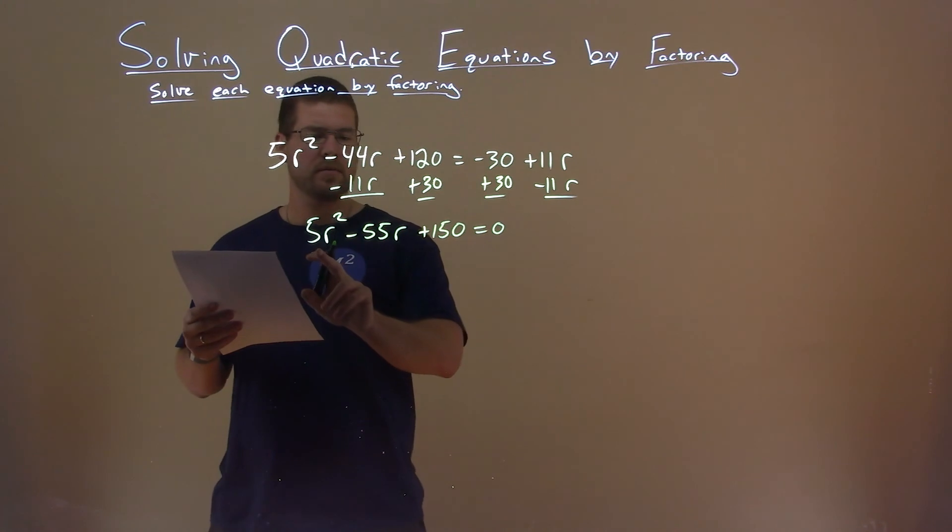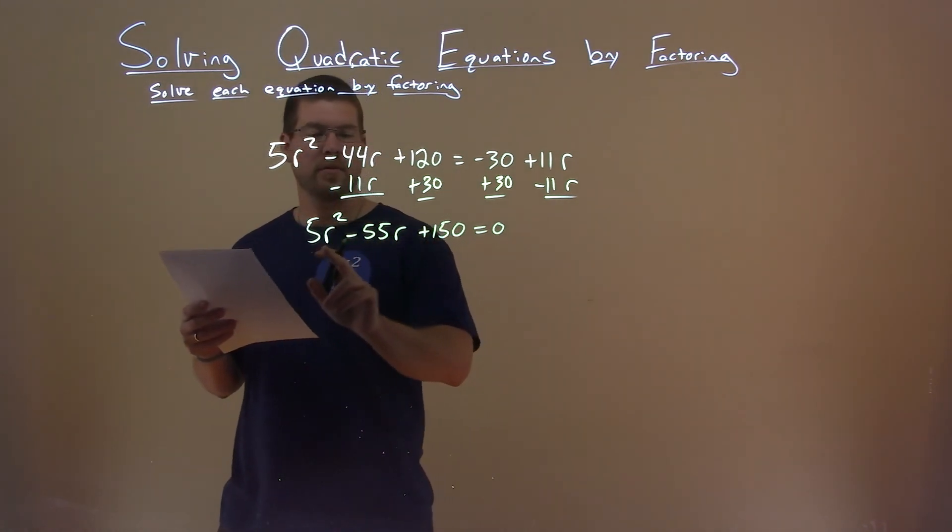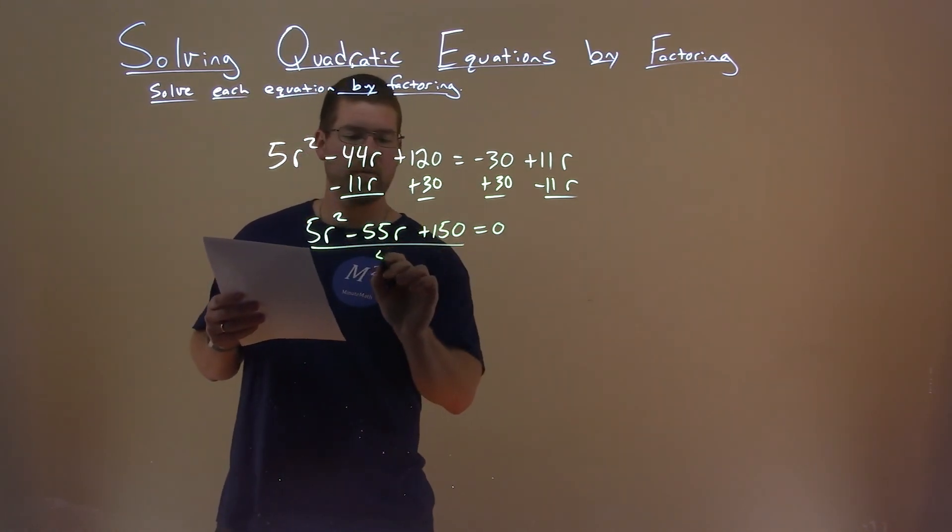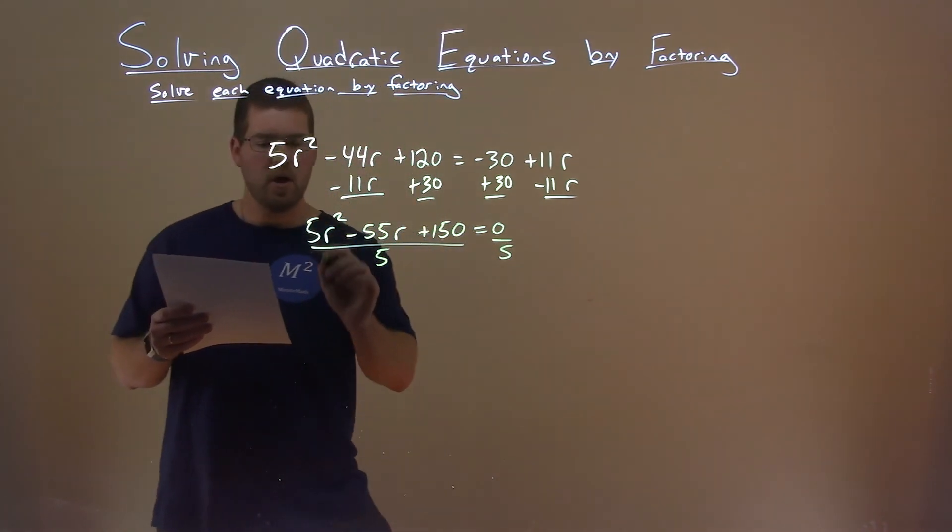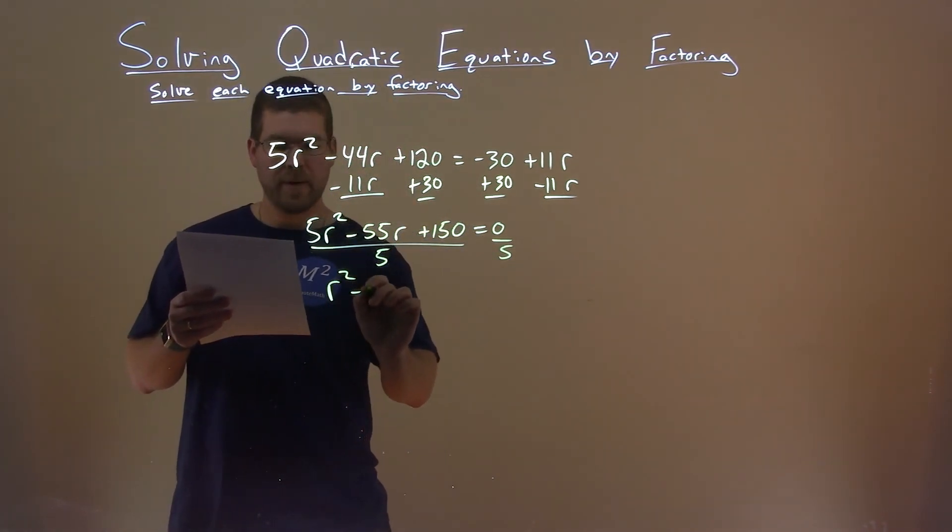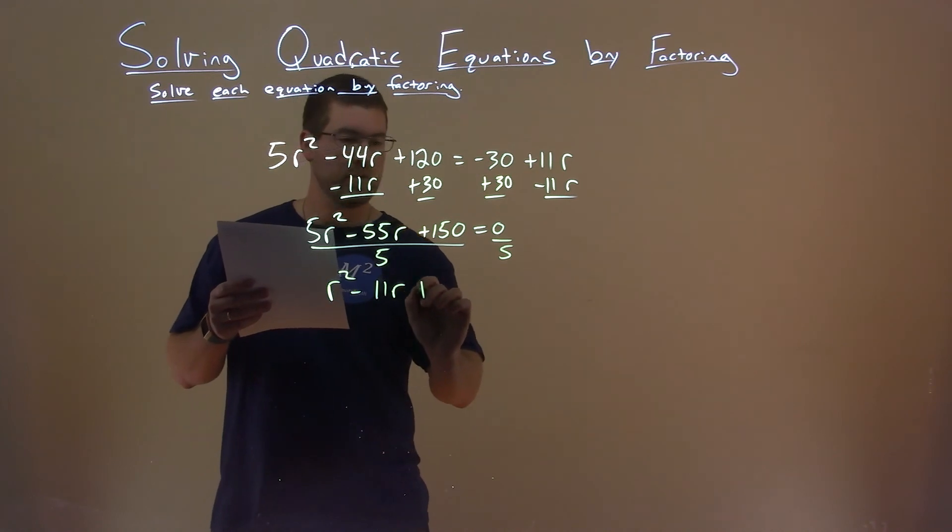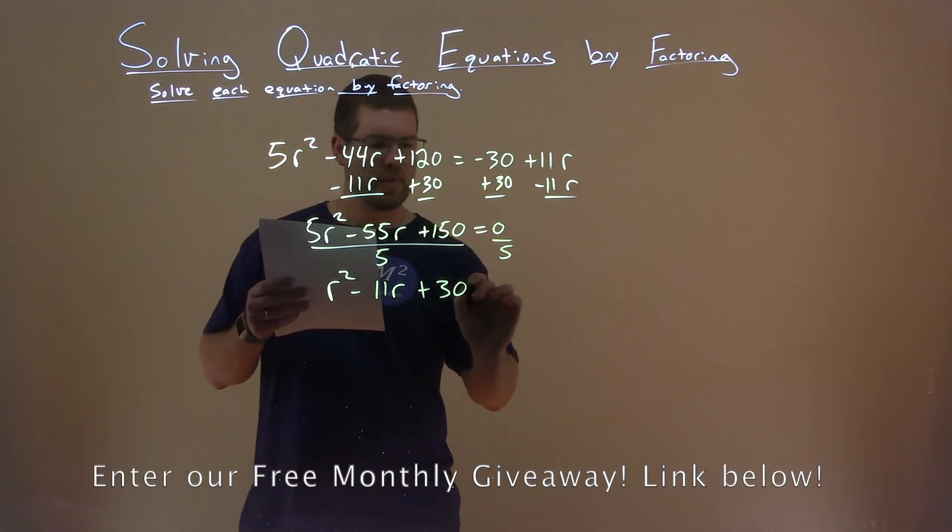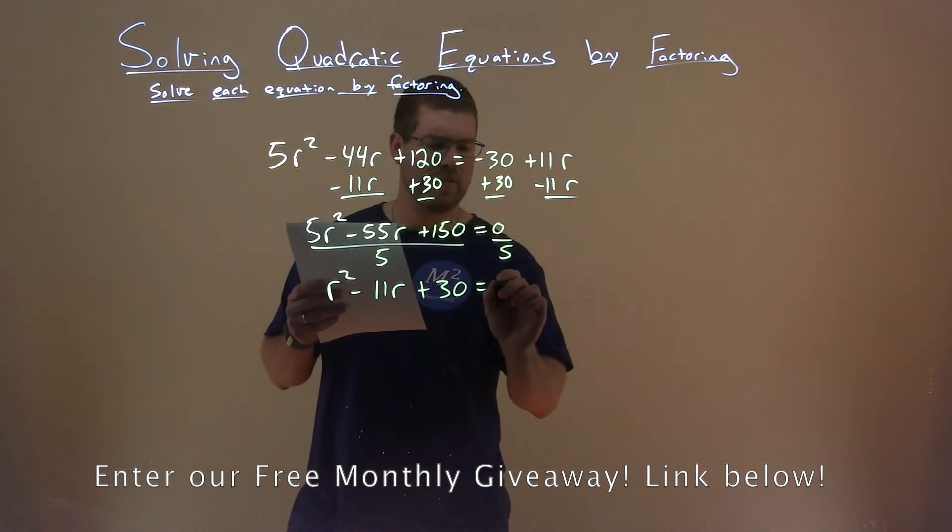Notice here there's a 5 that goes into all parts here. So I'm dividing both sides of the equation by 5. We're left with r squared minus 11r plus 30 equals 0.